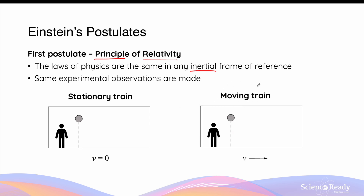Another example of an inertial frame of reference is that of a moving train. Since the person is standing in the train carriage, he or she will be moving at the same velocity without any acceleration. So if the train is moving at constant velocity v with no acceleration, the person and the ball are both said to be in inertial frames of reference. From the perspective of the person in the train, the falling motion of the ball will also be identical to that in the stationary train — that is, it will fall vertically due to gravity.